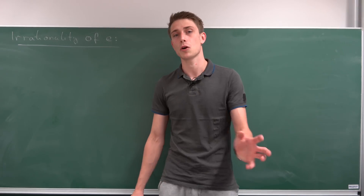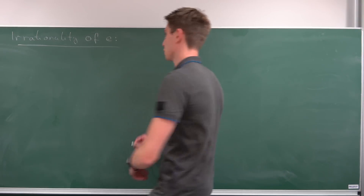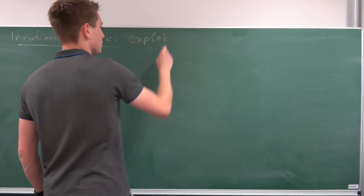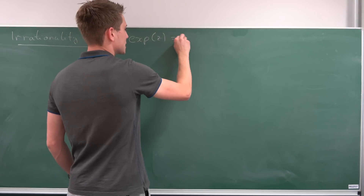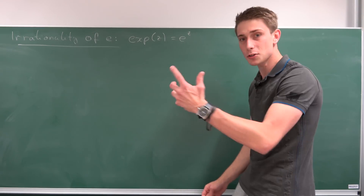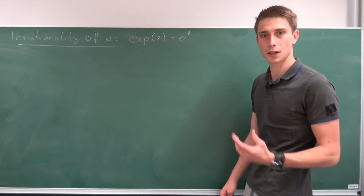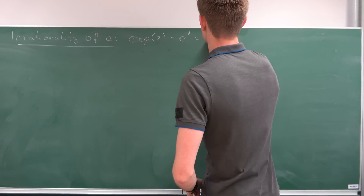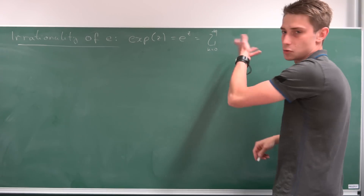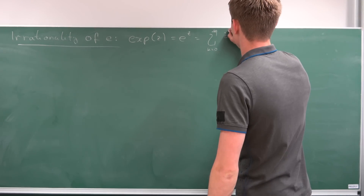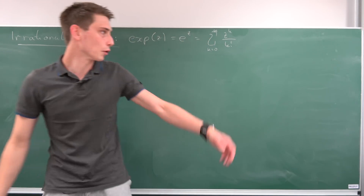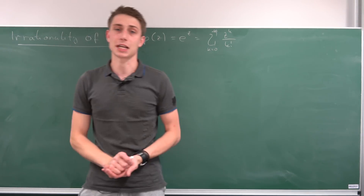At first I would like to take a look at one of many definitions of the exponential function. The exponential function of some complex number z can also be written as e to the z — that's something that's well known. But also you can write this expression in the form of a Taylor series: namely the sum going from k equals zero to infinity of z to the kth power over k factorial. This right here is the definition of the exponential function.